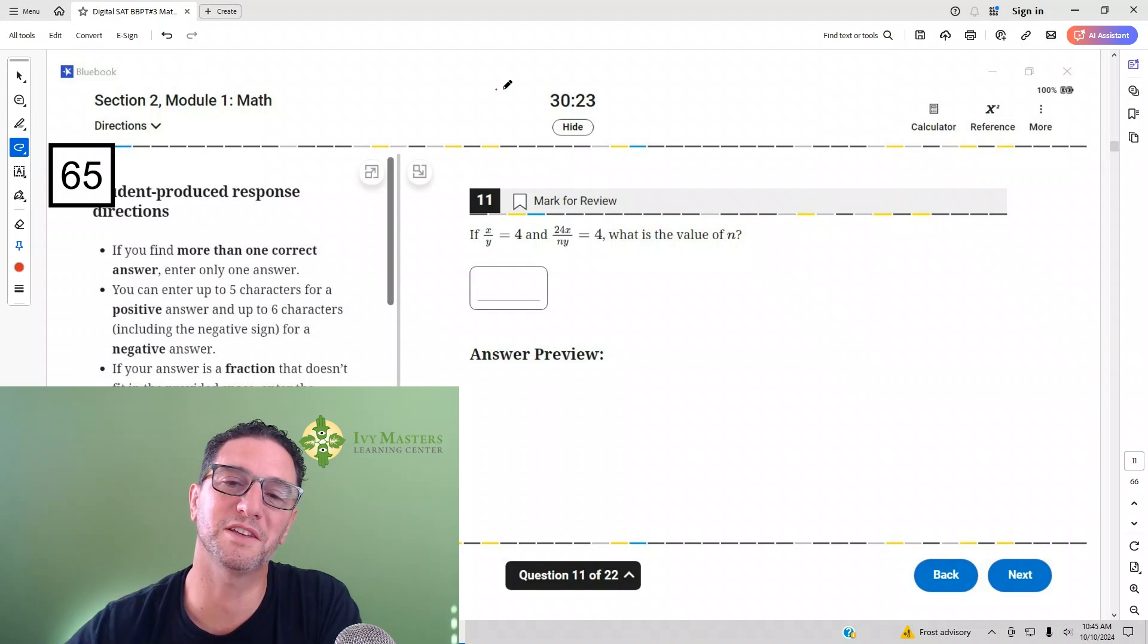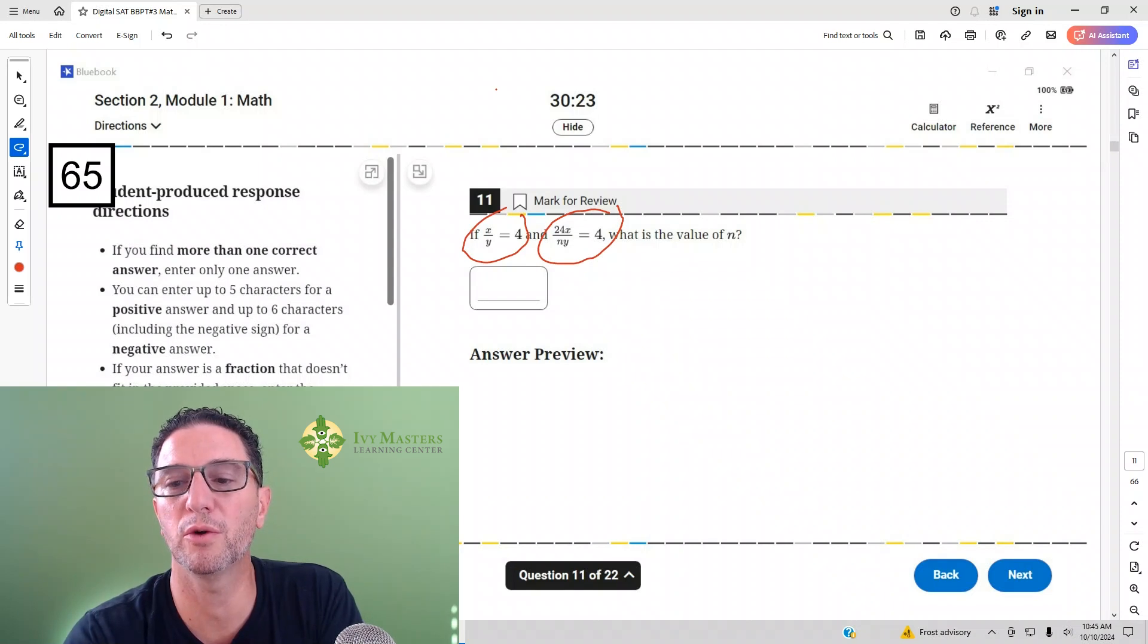There's the 11th question from Digital SAT Test 3, Module 1, Number 11. It tells us x over y equals 4, and then gives us this scenario. We got to solve for n.